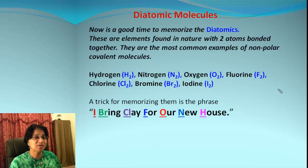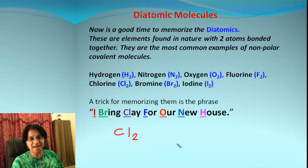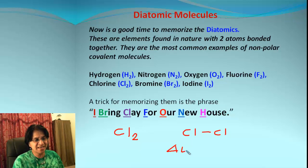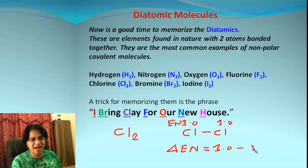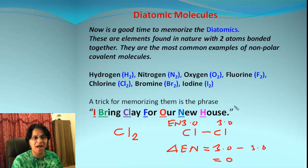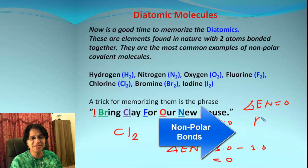Now, will these diatomic molecules be polar or non-polar? Let's find out. Chlorine is written as Cl2, meaning we have a bond between each of the chlorine atoms. So there is delta electronegativity — written as delta En — which is the difference between the electronegativity values for each chlorine. When we subtract that, it is equal to zero. The same way, for any diatomic, delta En will always equal zero.